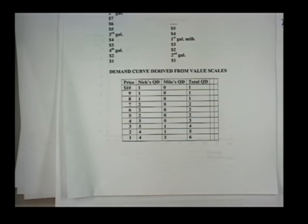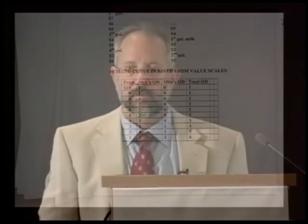The last column is the total. So at $1, Mila and Nick together would buy six gallons. At $2, they'd buy five. That would be the market demand.